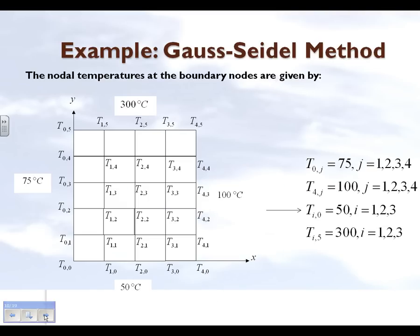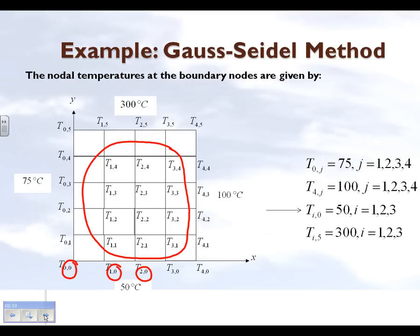We have 12 nodes at which we don't know the temperature. Look at the node numbering: we call this node 0,0, then 1,0, 2,0, and similarly 0,1, 0,2, and so on. Since we have 12 nodes at which we don't know the temperature, we need to set up 12 equations and 12 unknowns. Using Gauss-Seidel, we write down each equation for each node in terms of its surrounding nodes. For example, T(1,1) is given in terms of the temperatures at the four surrounding nodes.